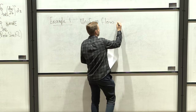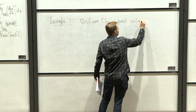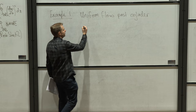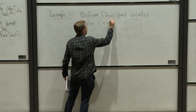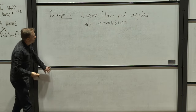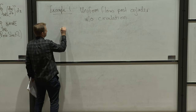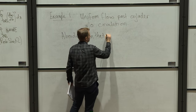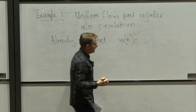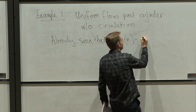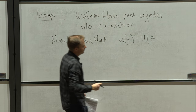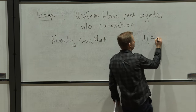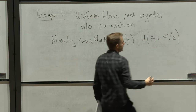We're talking about uniform flow past the cylinder. The problem we've already considered — which we'll do again for comparative purposes — is to think about the flow without any circulation. We've already seen that the complex potential w(z) can be calculated using Milne-Thompson's circle theorem. The result is that w(z) equals Uz — the complex potential of the uniform stream — plus a²/z, where a is the radius of the cylinder.